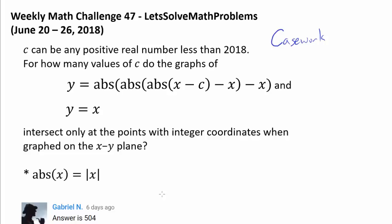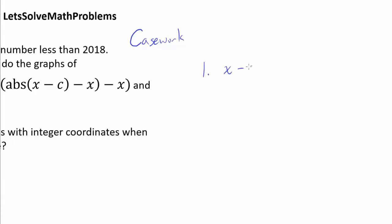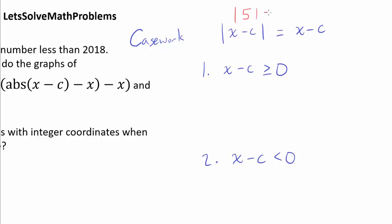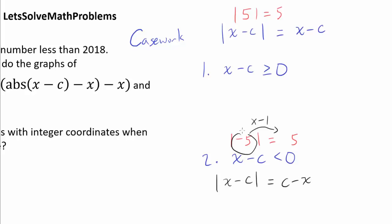In our case, we can look at two different cases. First case is when x minus c is positive or zero, and the second case is when x minus c is less than zero. When x minus c is positive, the absolute value of x minus c is just x minus c, so we can drop the absolute value signs. But when x minus c is less than zero, we multiply that number by negative one — so the absolute value of x minus c becomes c minus x. This casework makes the algebra much easier.